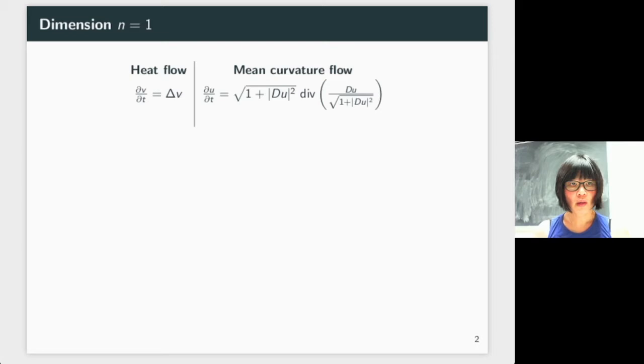In dimension one, you see the equation of the previous slides with a general dimension. In dimension one, it writes as ∂V/∂t = Vₓₓ, and ∂U/∂t = Uₓₓ - Uₓ·Uₓₓ/(1 + Uₓ²).